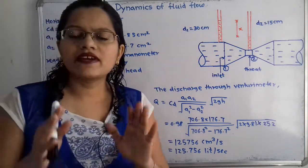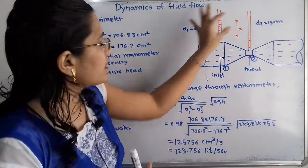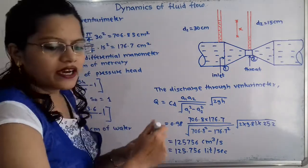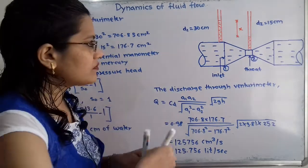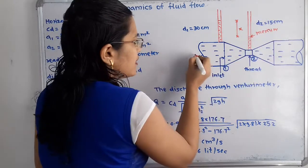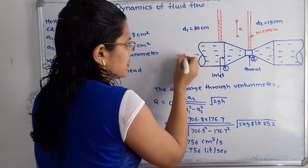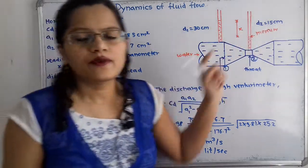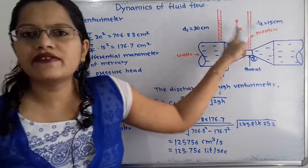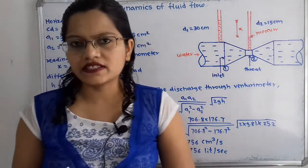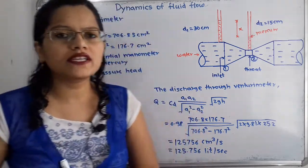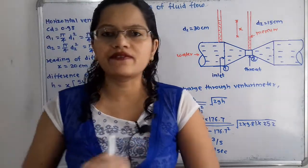The reading of the differential manometer is given as the level difference of the heavier liquid in the U-tube, so x is equal to 20 centimeter of mercury. In this U-tube manometer, mercury is present and water flows through the pipe, so the heavier liquid is mercury and the level difference is 20 centimeter.